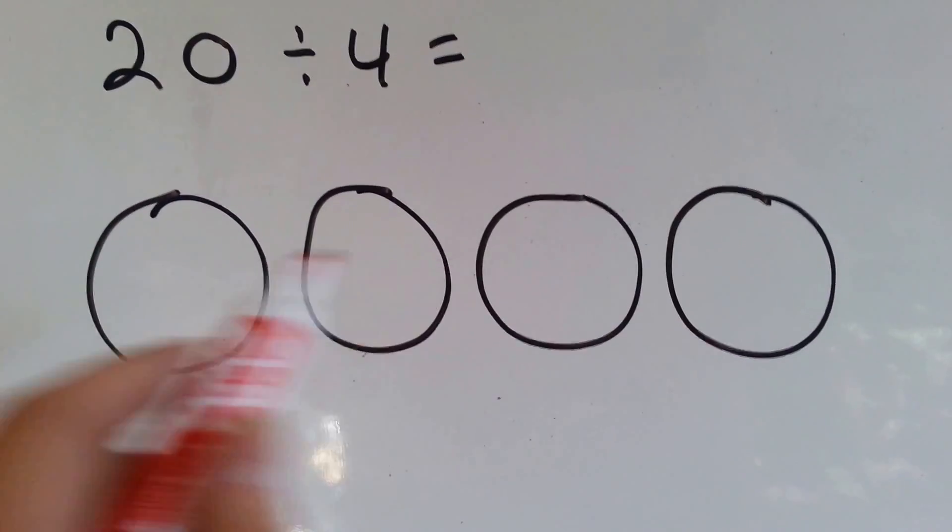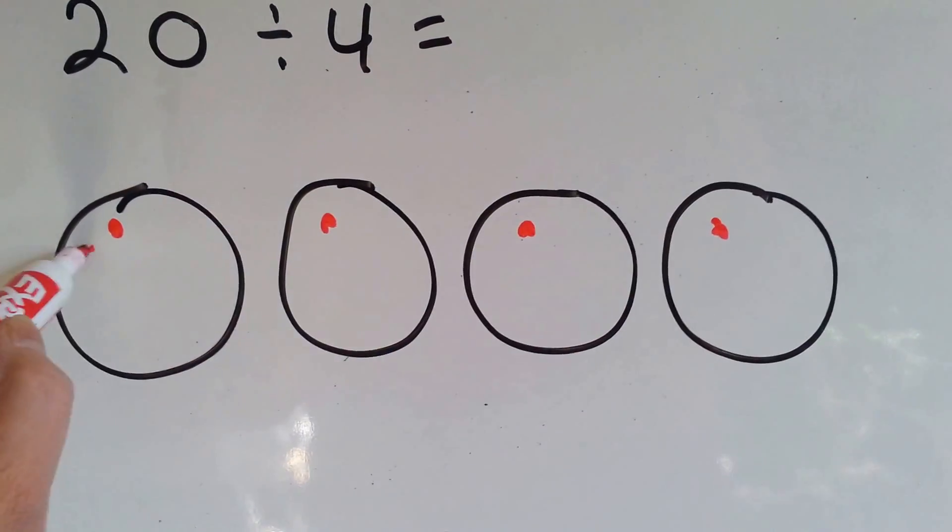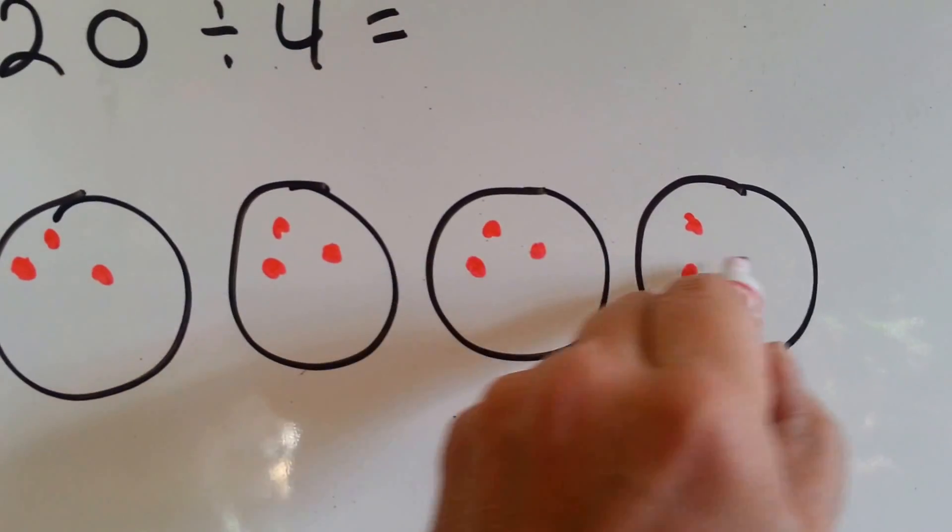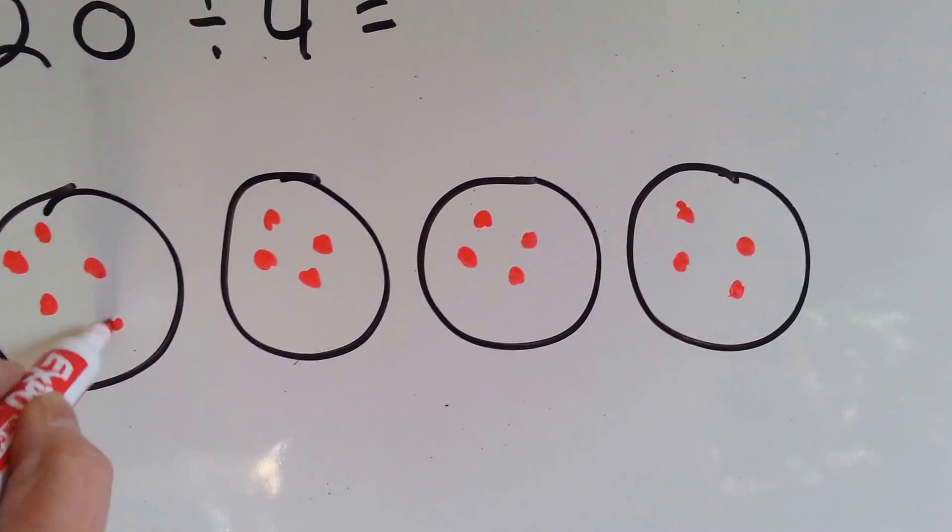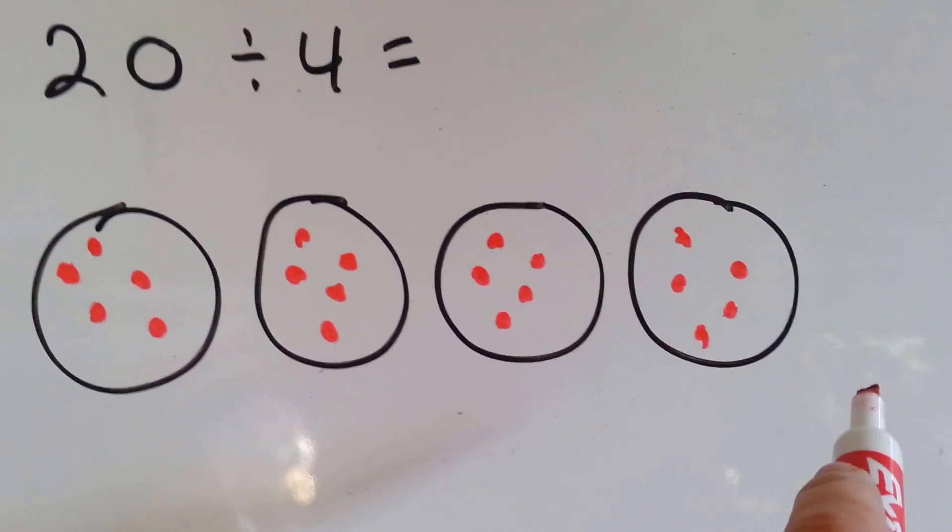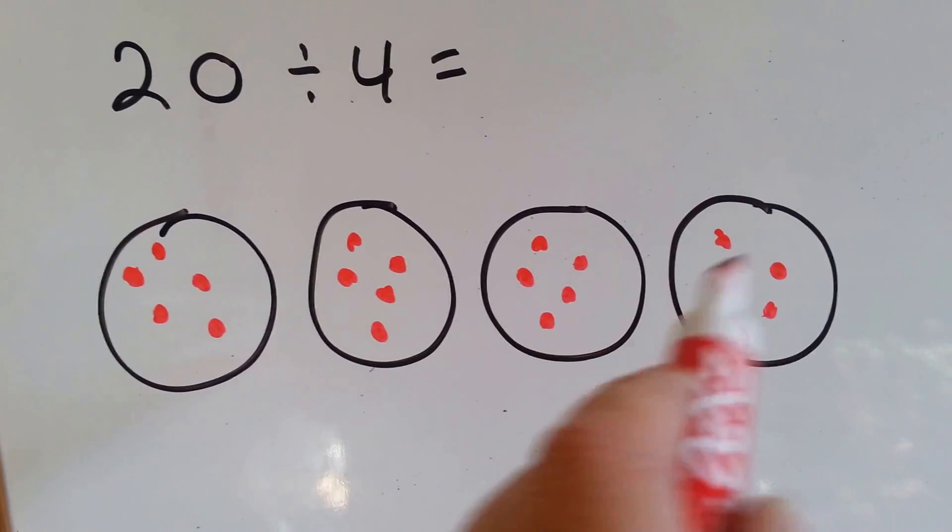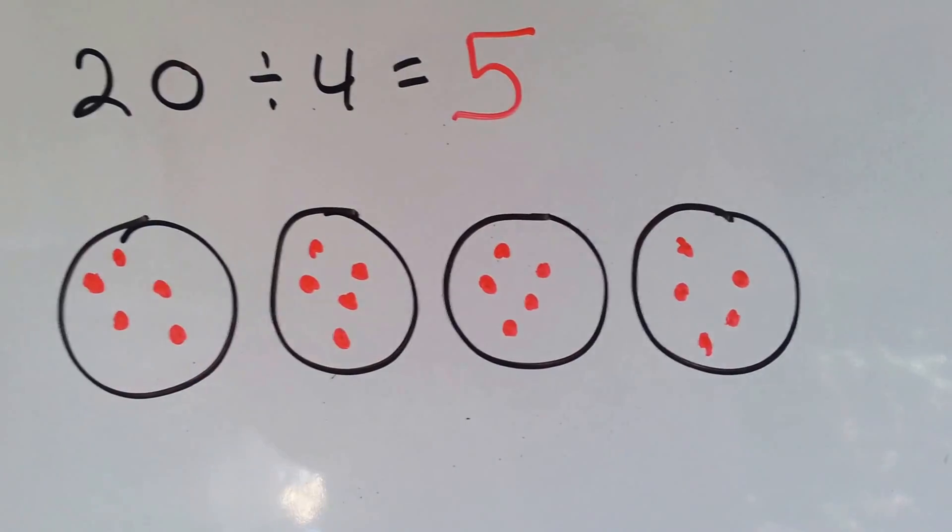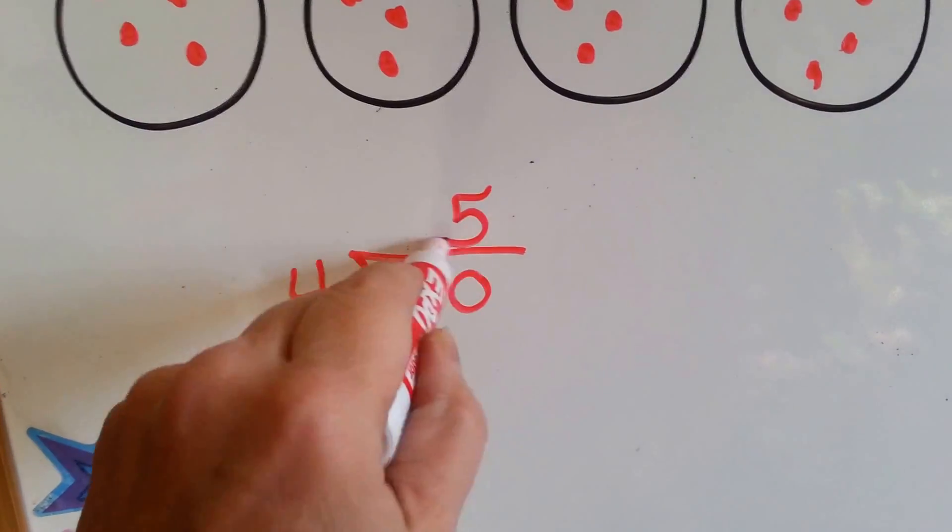But they each got to take a turn so that you can do it evenly. 1, 2, 3, 4, 5, 6, 7, 8, 9, 10, 11, 12, 13, 14, 15, 16, 17, 18, 19, 20. Now you have to make them take turns like that or it's not going to work. So 20 divided into 4 groups, how many dots are in each group? 1, 2, 3, 4, 5. So 20 divided by 4 equals 5.